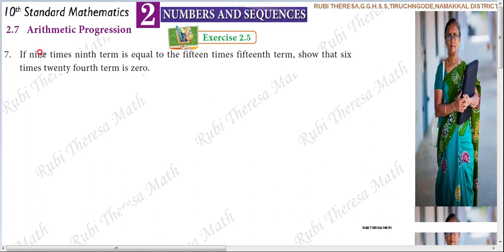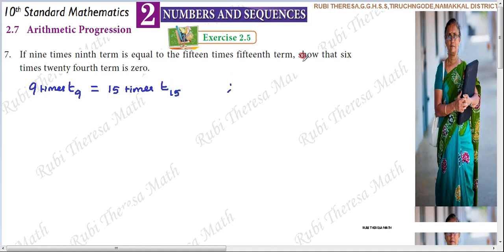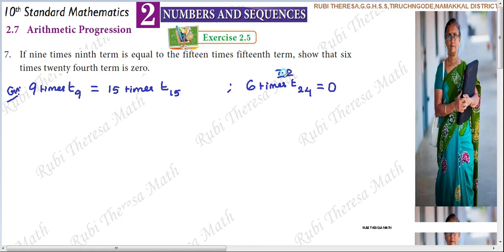Let's read the question. 9 times the 9th term — here 9th term we represent as T9 — is equal to 15 times the 15th term, T15. We have to show that 6 times the 24th term, T24, is 0. This is given; we have to show that. General representation: 6 times T24 is 0.